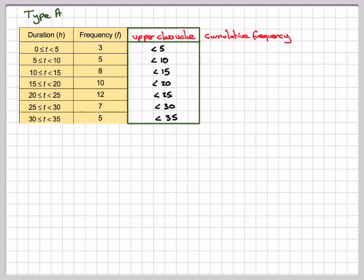Now we do the cumulative frequencies. The first one will be 3. The next one will be 8, because 3 plus 5 makes 8. Then 3 plus 5 plus 8 will make 16. 16 plus 10 will make 26, plus 12 will make 38, plus 7 will make 45, and plus 5 will make 50. So this one should always be 50 because there were 50 here altogether. It's a way of checking.